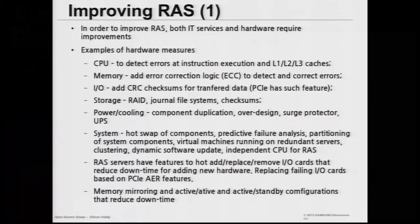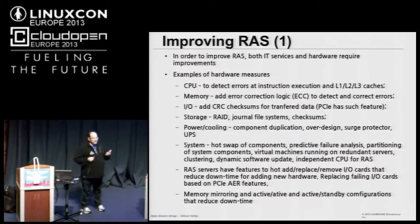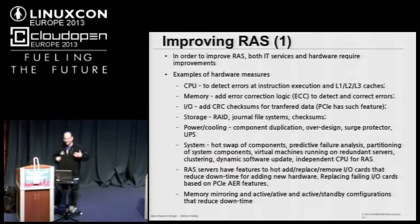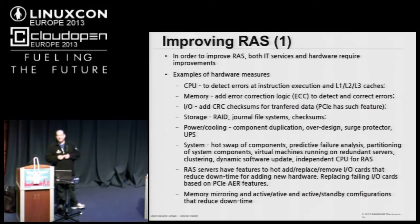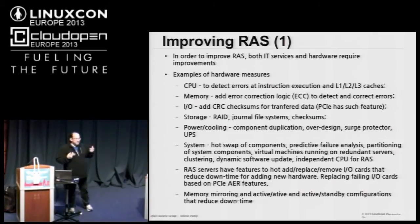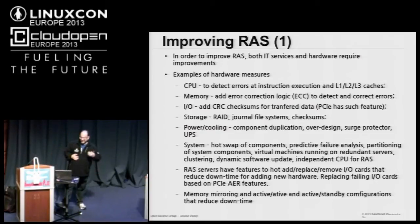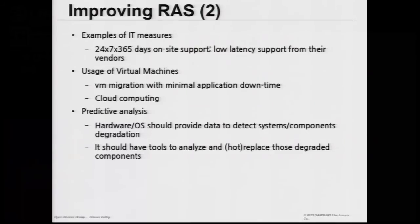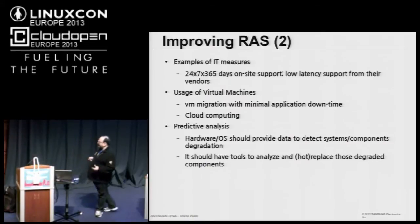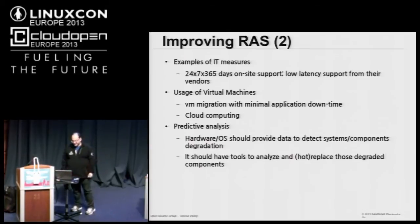There are several ways to improve the availability of a system — hardware measures, software measures, and service measures. For CPUs, I can detect errors inside caches, buses, and the processing block. For memory, I can detect memory errors. On storage, I may add checksums. I can also improve high availability by improving support from the IT team or from my vendor.